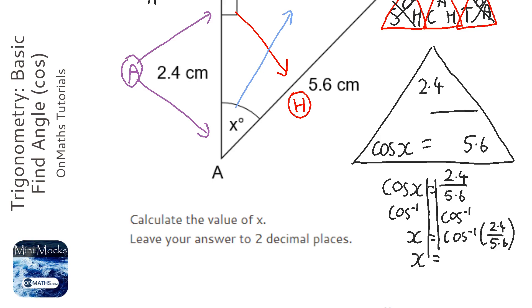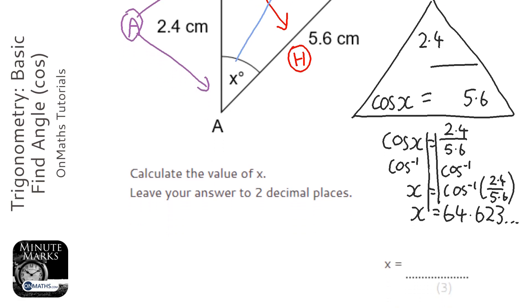I get 64.623 and so on, and it says it wants it to two decimal places, so 64.62.